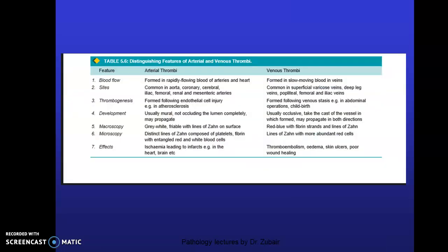Distinguishing features between arterial and venous thrombi: arterial thrombi originate from arteries — aorta, coronary, cerebral arteries — formed following endothelial cell injury, usually mural and not fully occluding the lumen, grey-white and friable with distinct lines of Zahn, composed of platelets and fibrin with entangled red and white blood cells; ischemia leads to infarcts. Venous thrombi are seen in superficial varicose veins and deep veins of the leg — popliteal, femoral — usually occlusive, taking the cast of the vessel, red-blue, with fibrin strands, lines of Zahn, and more abundant RBCs; effects include thromboembolism, edema, skin ulcers, and poor wound healing.